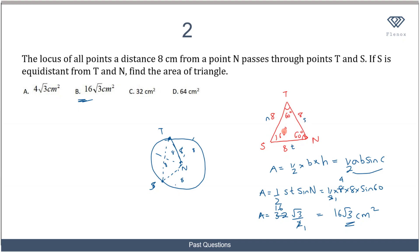Since all sides were equal we had an equilateral triangle. Using area = half times a times b times sine 60, we got half times 8 times 8 times sine 60, giving a final answer of 16 root 3 cm squared. The correct answer to this question is option B.